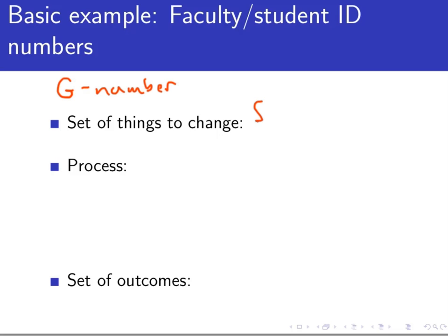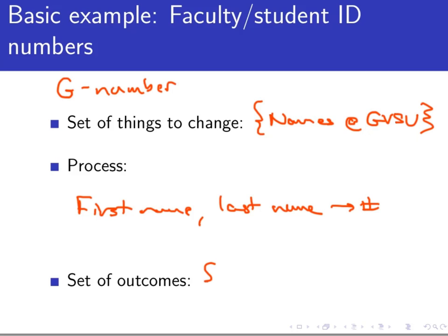So let's run through and see if this has the three basic properties of any process we want to consider. The things that I intend to change here would be the set of all names of faculty and students at GVSU. The process of change is the computer program that's on our website that takes this first and last name combination and does a database lookup and then prints the G number to my screen. And then the outcomes of the change would be the set of integers between 0 and 99999999.